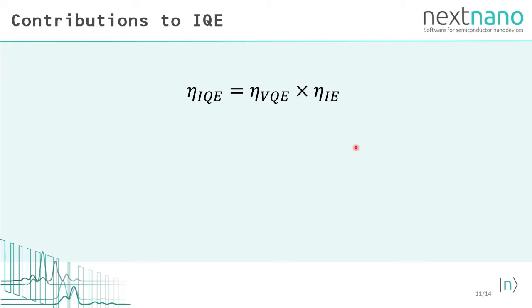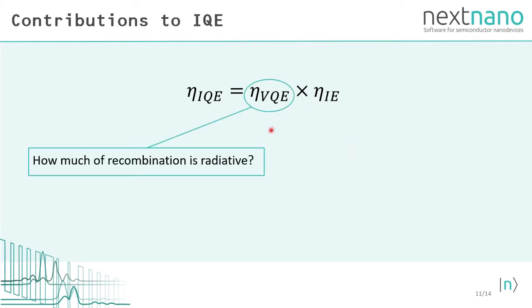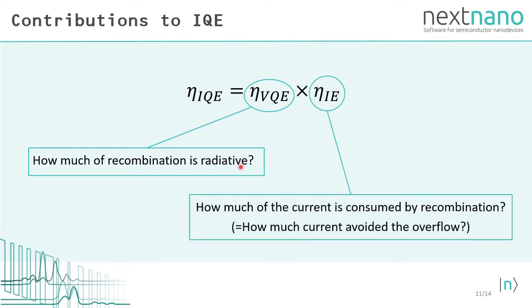The internal quantum efficiency can be decomposed into these two efficiencies. The first part is the volume quantum efficiency that shows how much of recombination is radiative. In other words, this is the ratio of radiative recombination to the sum of radiative and non-radiative recombination. This VQE is also called radiative efficiency. The second part is the injection efficiency that shows how much of the current is consumed by recombination, avoiding the current overflow.